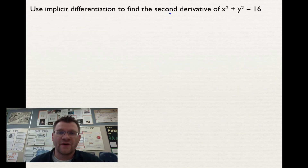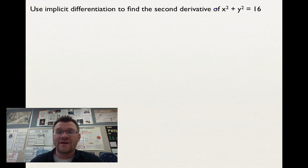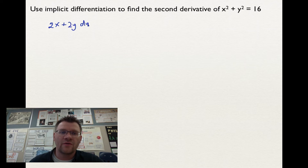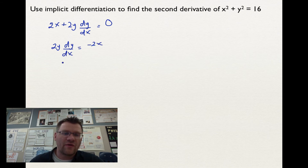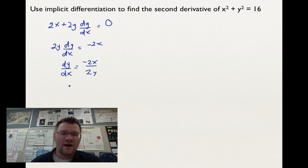Finally, use implicit differentiation to find the second derivative of x squared plus y squared equals 16. Since we have x's and y's in the same equation, the first derivative gives 2x plus 2y times dy/dx equals zero, because the derivative of any constant is zero. Solving for dy/dx: 2y times dy/dx equals negative 2x, divide both sides by 2y, and we get dy/dx equals negative x over y.